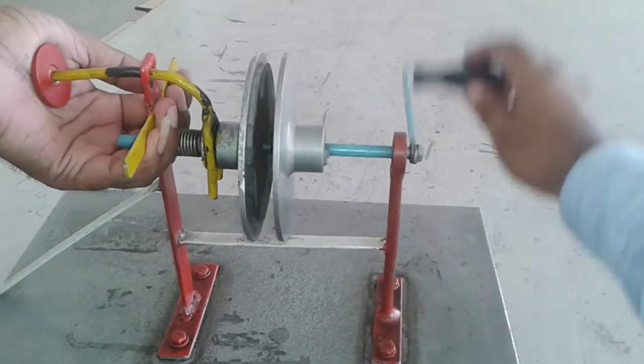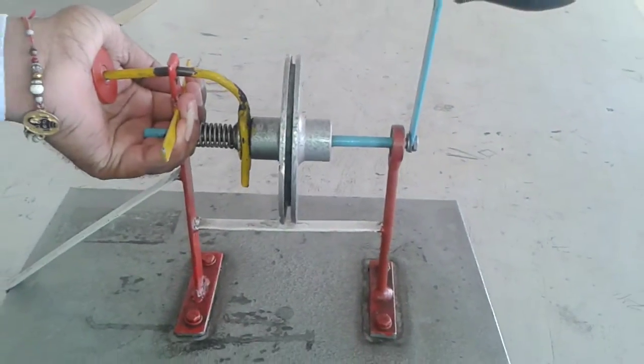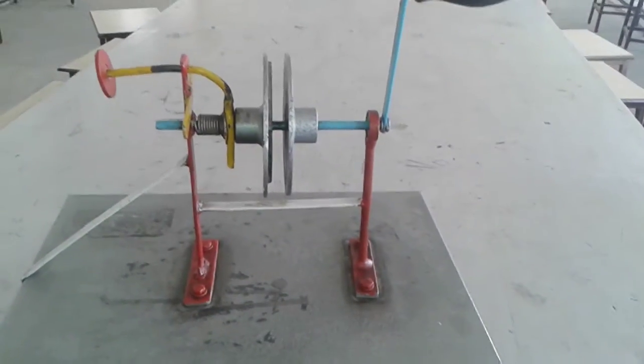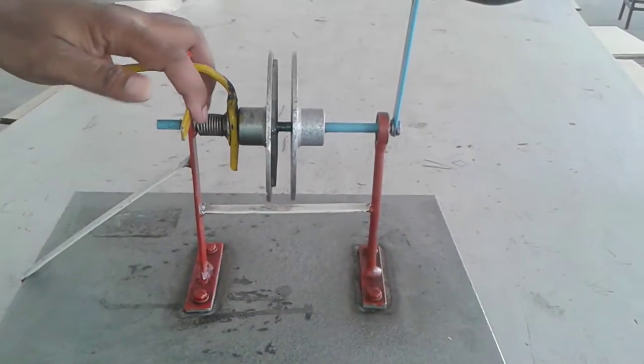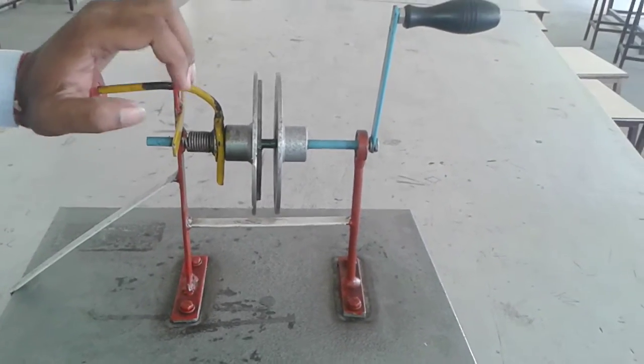I will give rotation to this drum. You can see the brake is applied to the rotating drum from the free end of the lever.